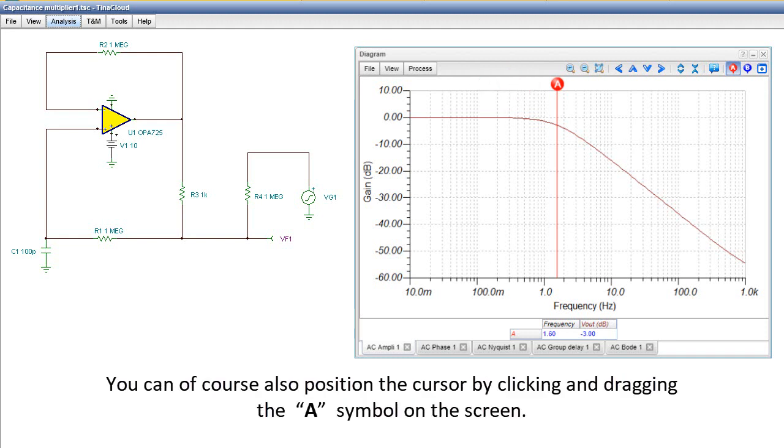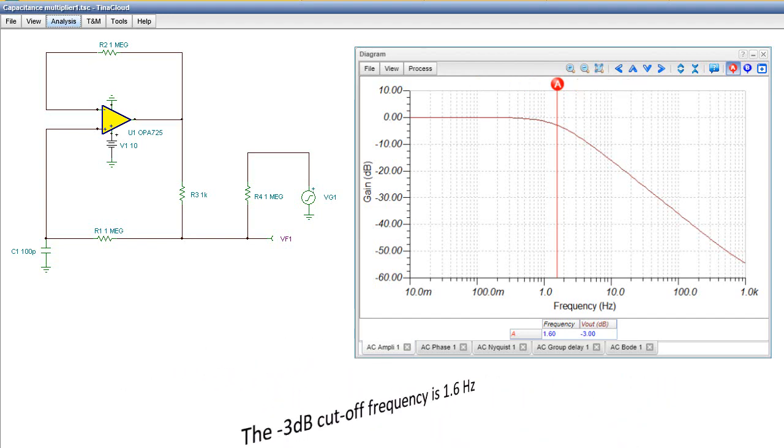You can, of course, also position the cursor by clicking and dragging the A symbol on the screen. The minus 3 dB cutoff frequency is 1.6 Hz.